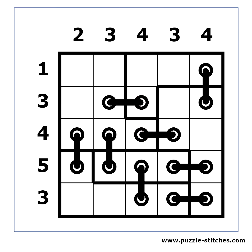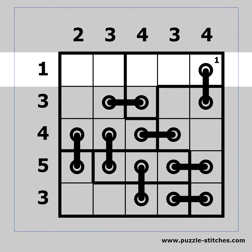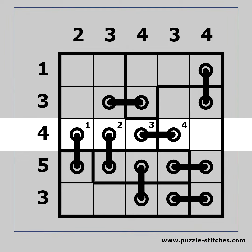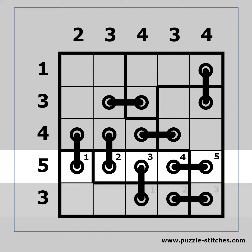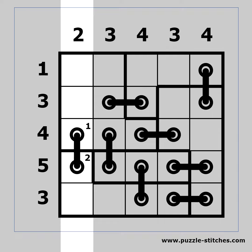This is what a solved puzzle looks like. The numbers on the side indicate how many holes there are on the row. The numbers at the top indicate how many holes there are on the column.